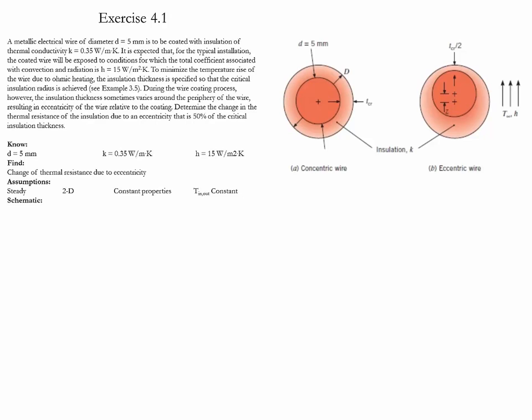The conduction of the wire is given. We need to evaluate how the thermal resistance is affected by the eccentricity of the wire with respect to the insulation layer. This system is considered to be steady, two-dimensional, it has constant properties, and we assume that the temperature going in and going out at the wire are equal to each other.